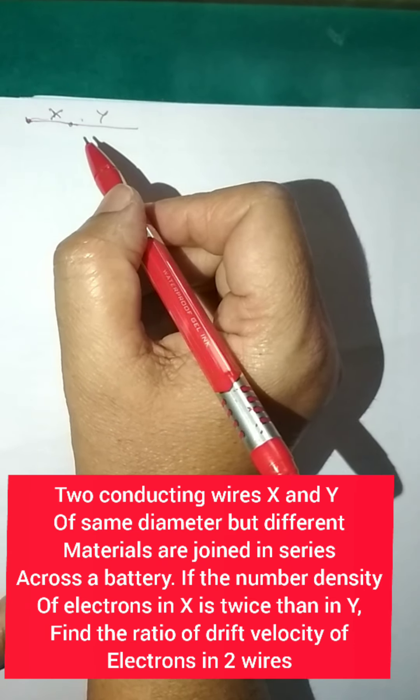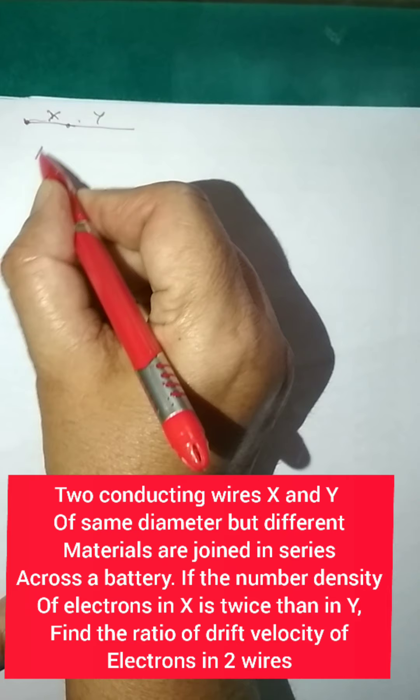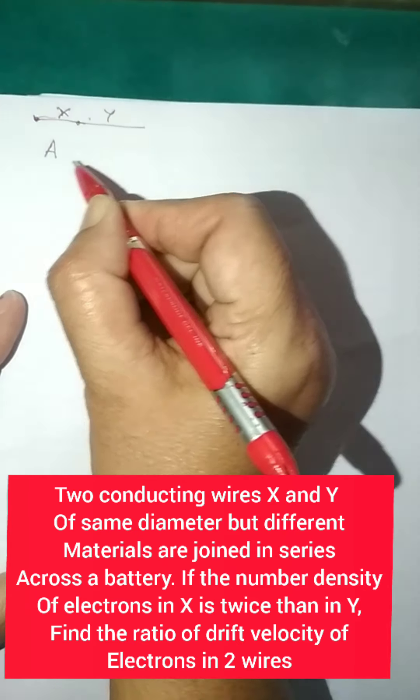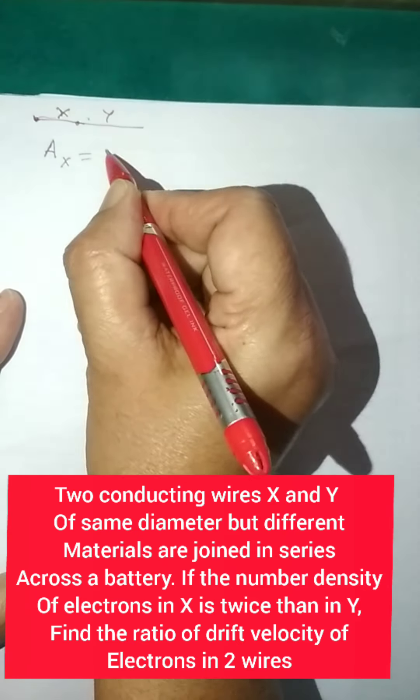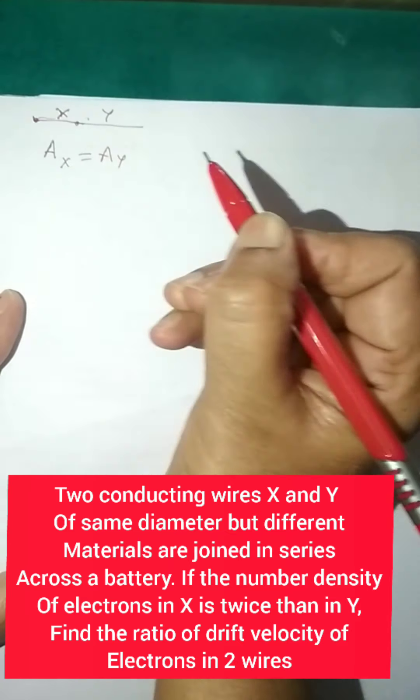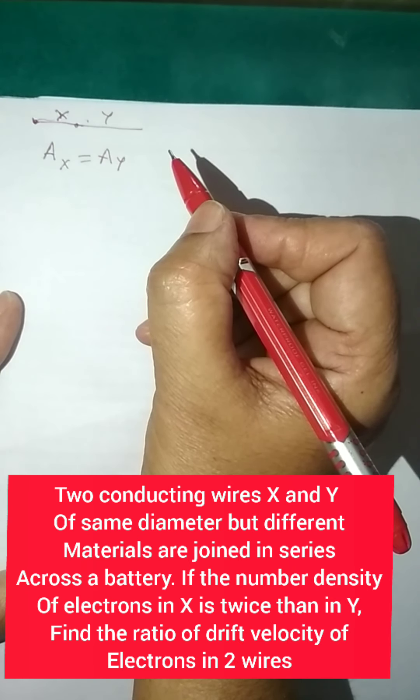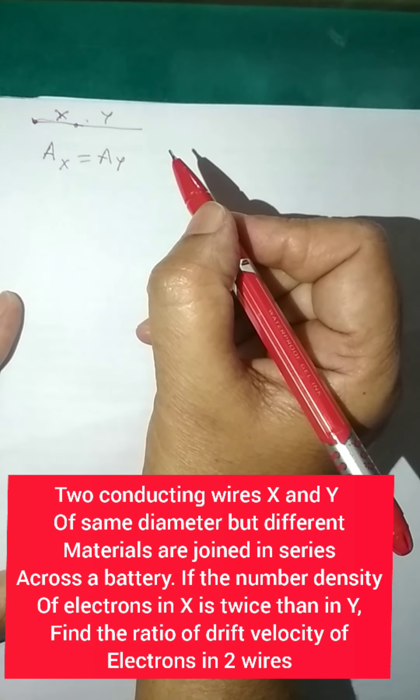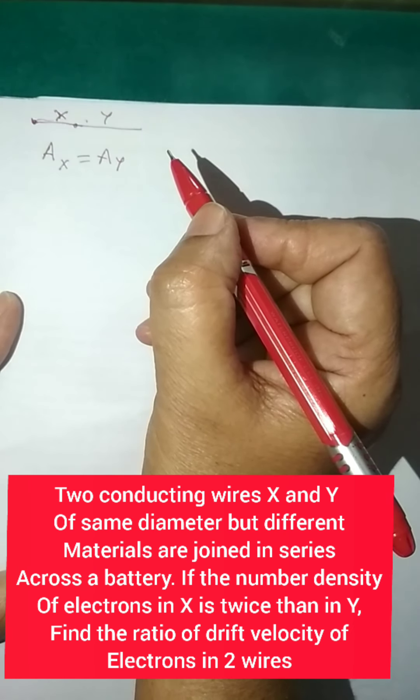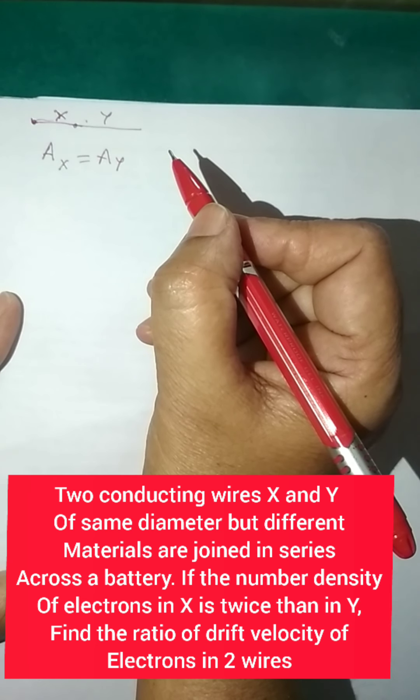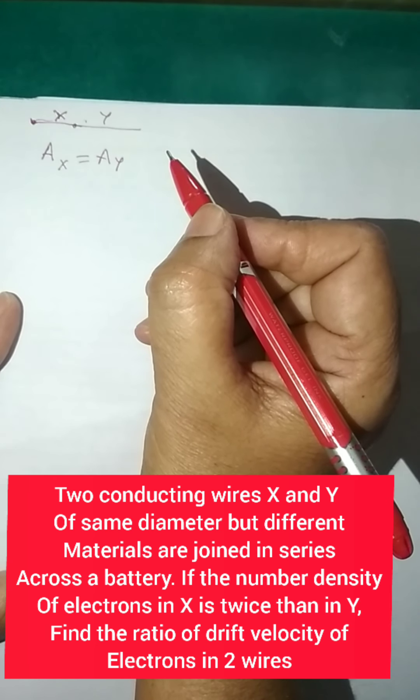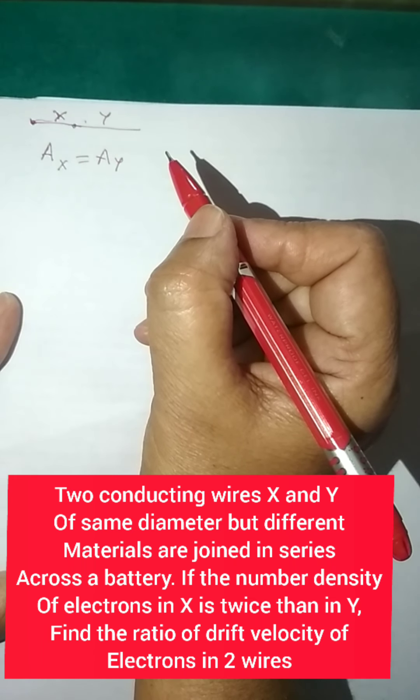Now what is given: they have got the same diameter. If they have got the same diameter, that means the area of cross section of X is equal to area of cross section of Y. But different materials are joined in series. If they are different materials, that means their rho will also be different.